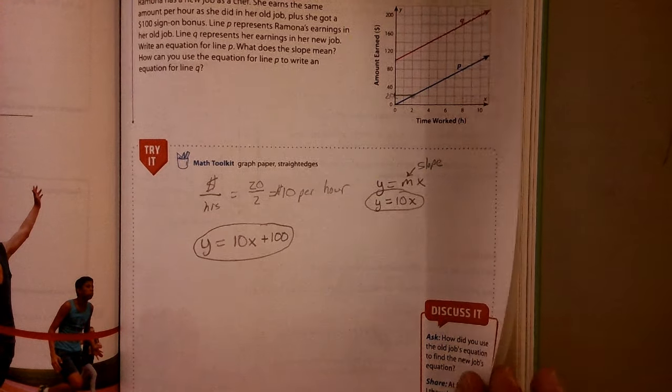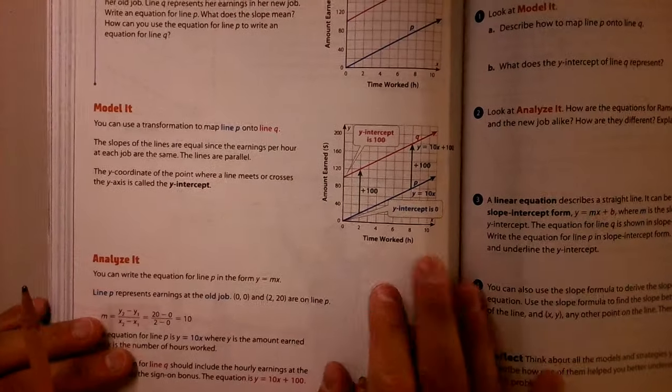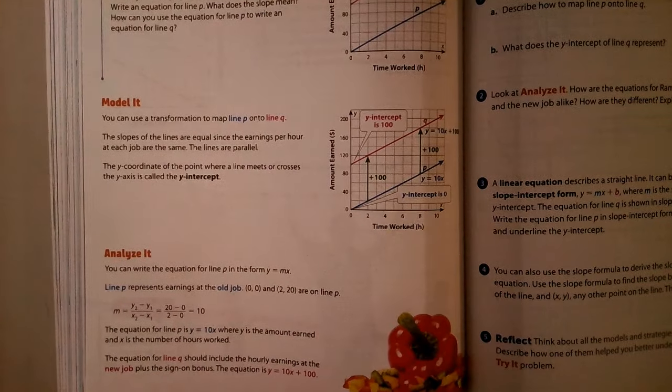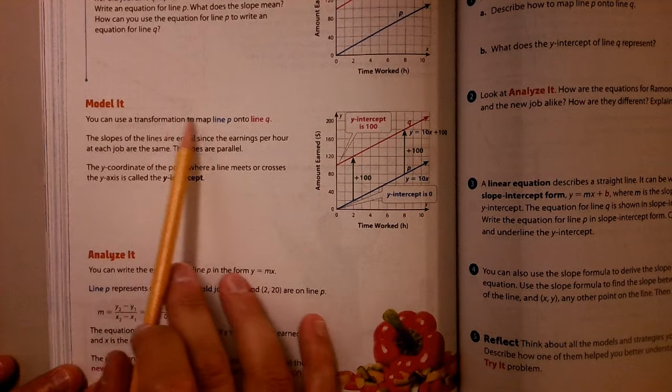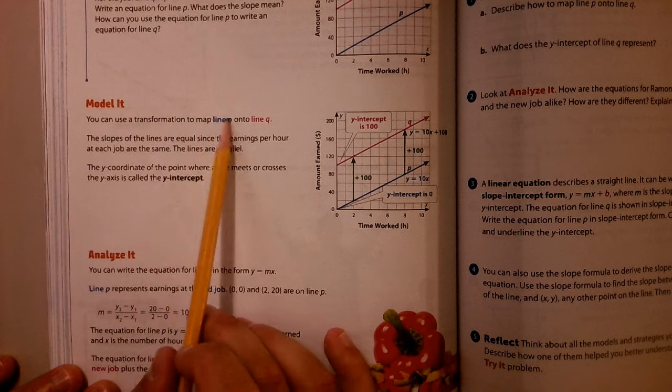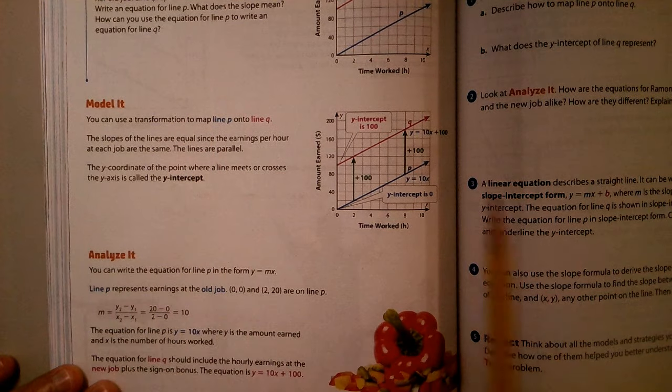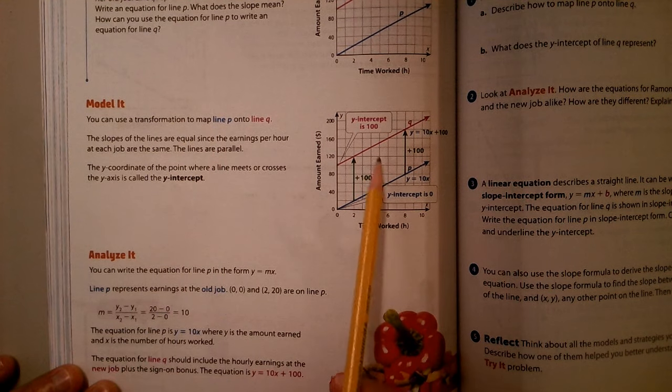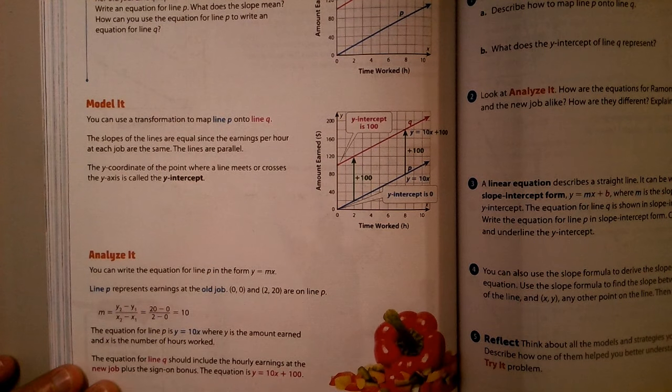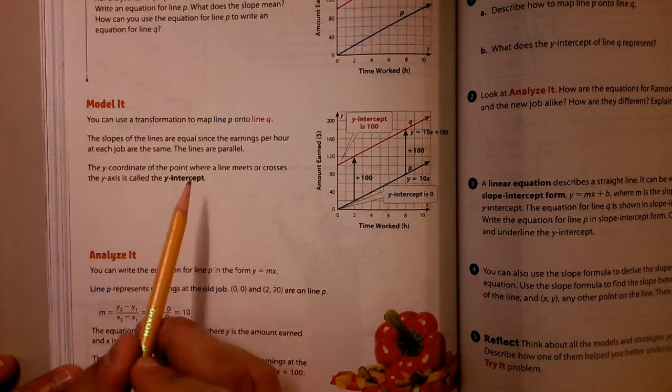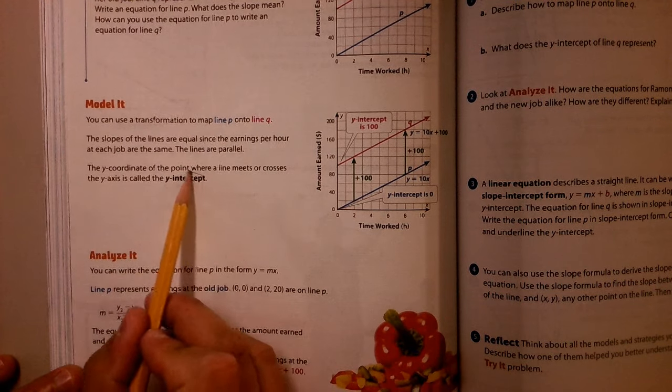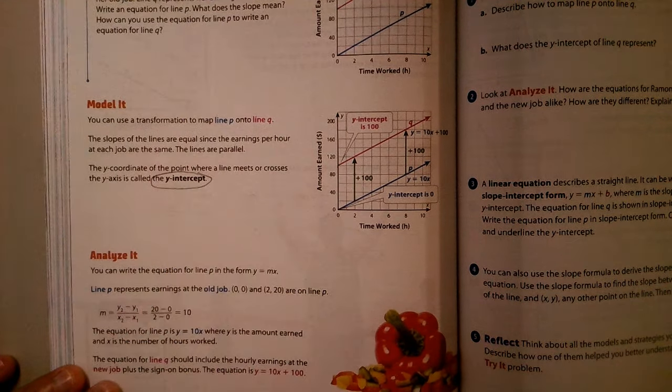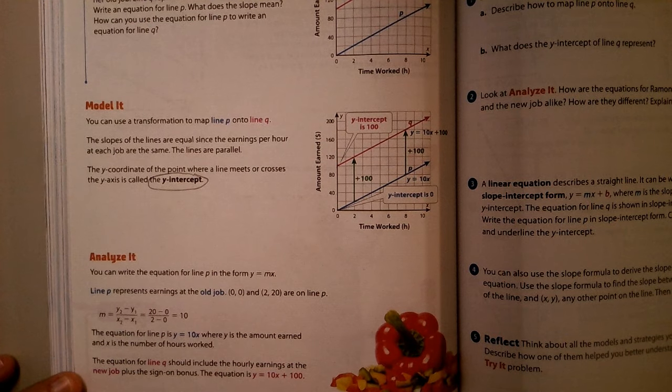Let's go ahead and turn the page and look at some other things here. So you can use a transformation to map line P onto line Q. If we just translated this up, it would fall perfectly right on that. And like I was saying, where those lines meet right here on the Y-intercept, that's a really key piece of this equation as we move forward.